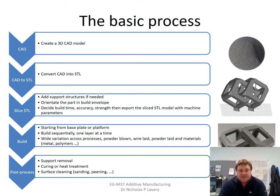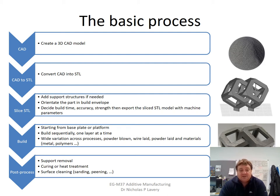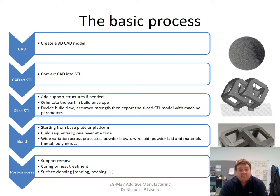At the heart of additive manufacturing is the basic process whereby we create a 3D CAD model, then somehow convert that CAD model into a file format acceptable for the software, which will break it down into a smaller set of layers. On most machines, a piece of software slices the file — and this file is often the STL file. The file gets sliced into a series of layers according to the machine, support structures are added, and the part is oriented within the build platform and build envelope. At this point we might make decisions about layer thickness, part accuracy, and material properties.